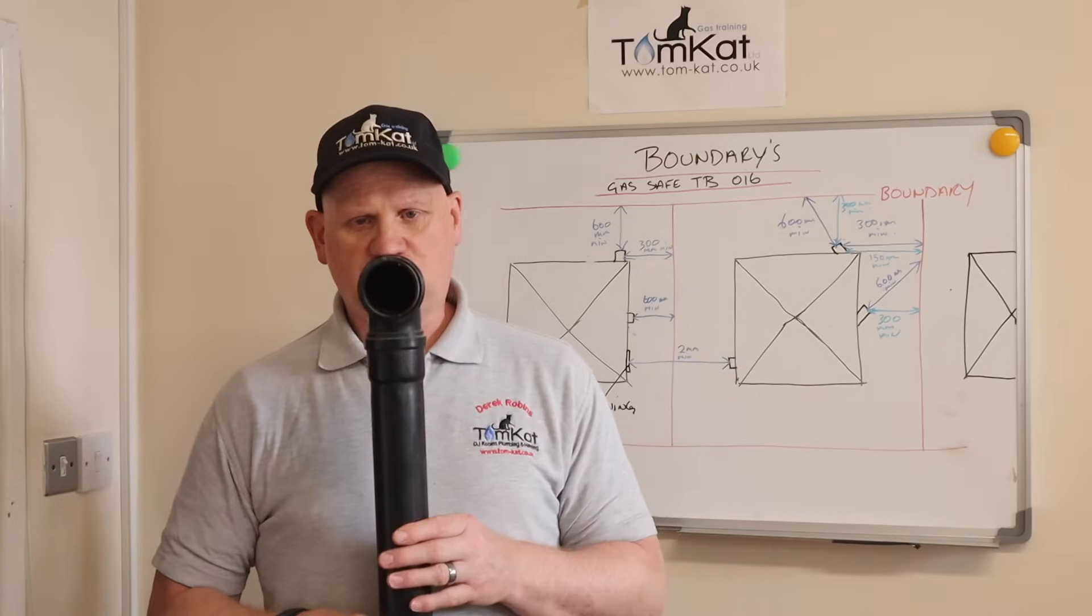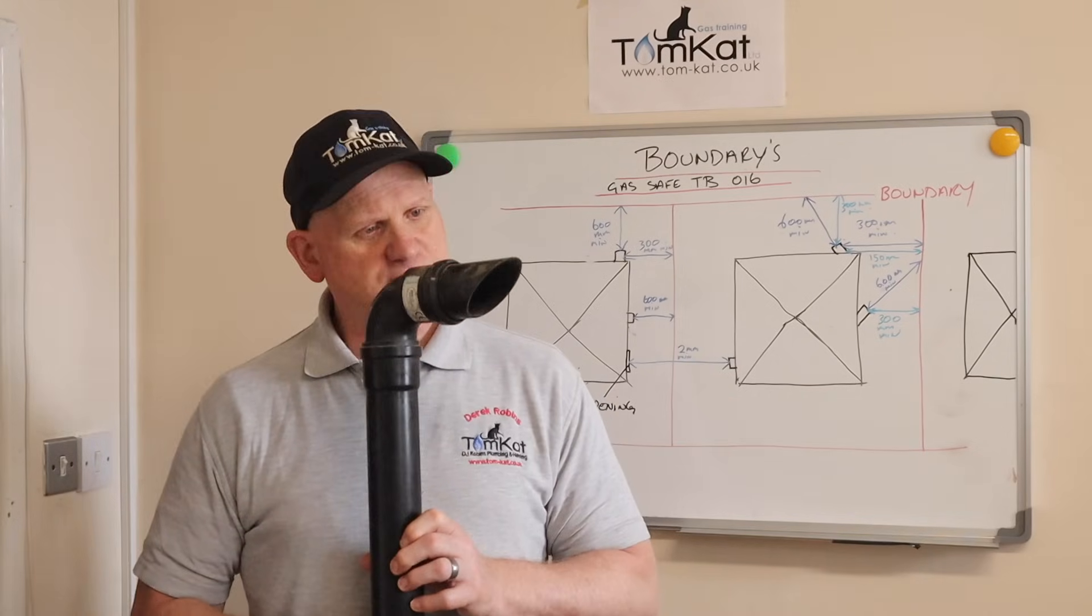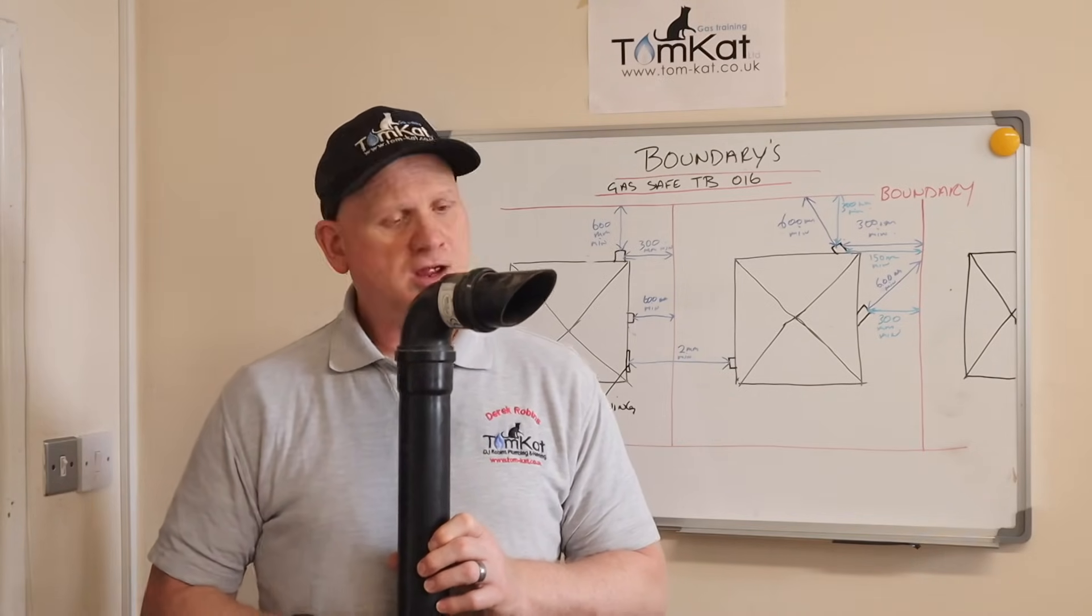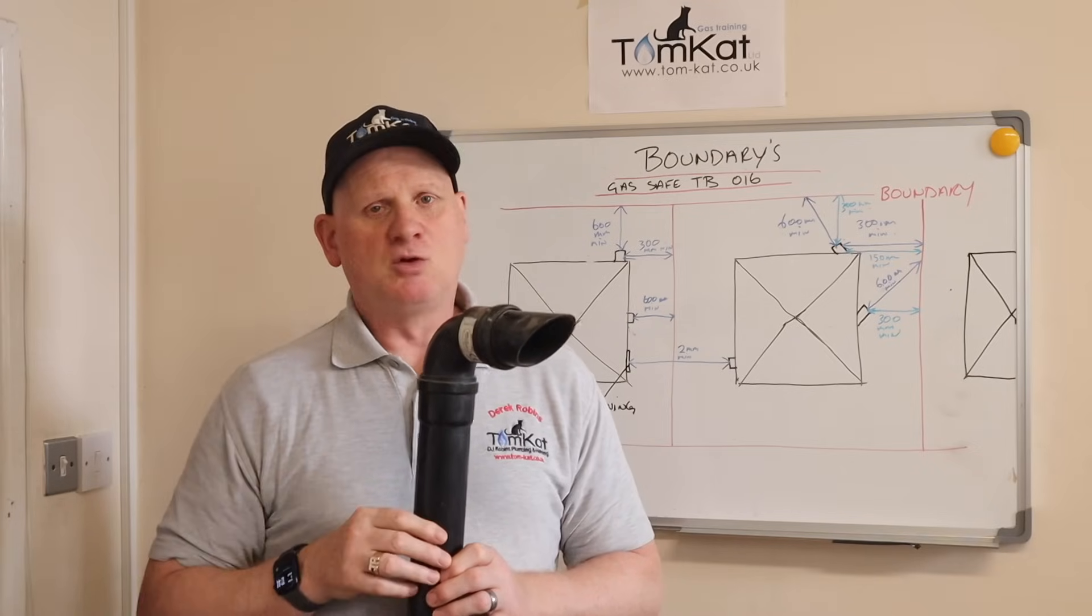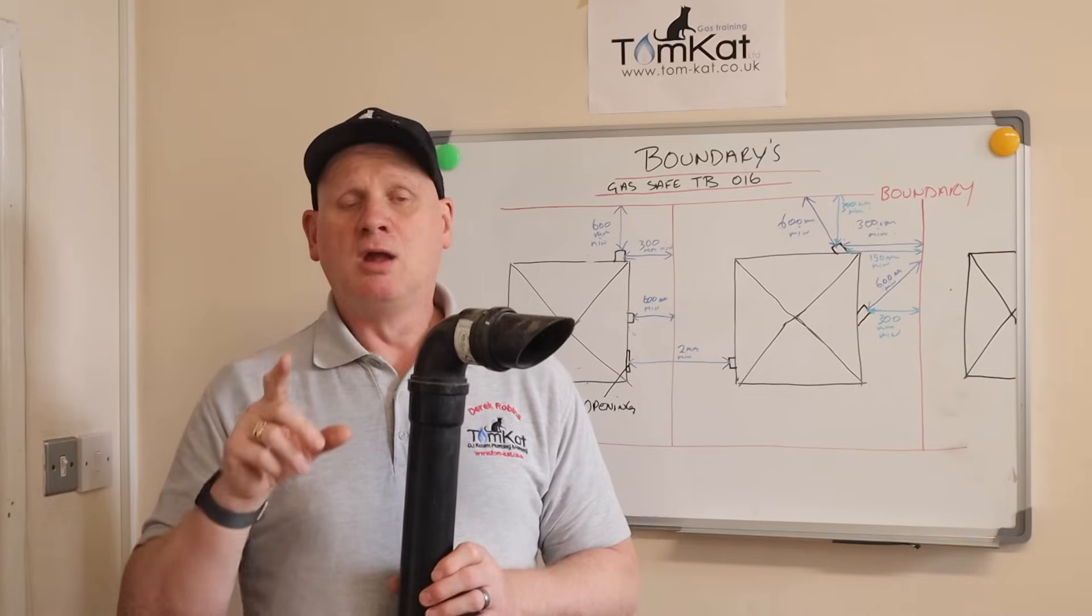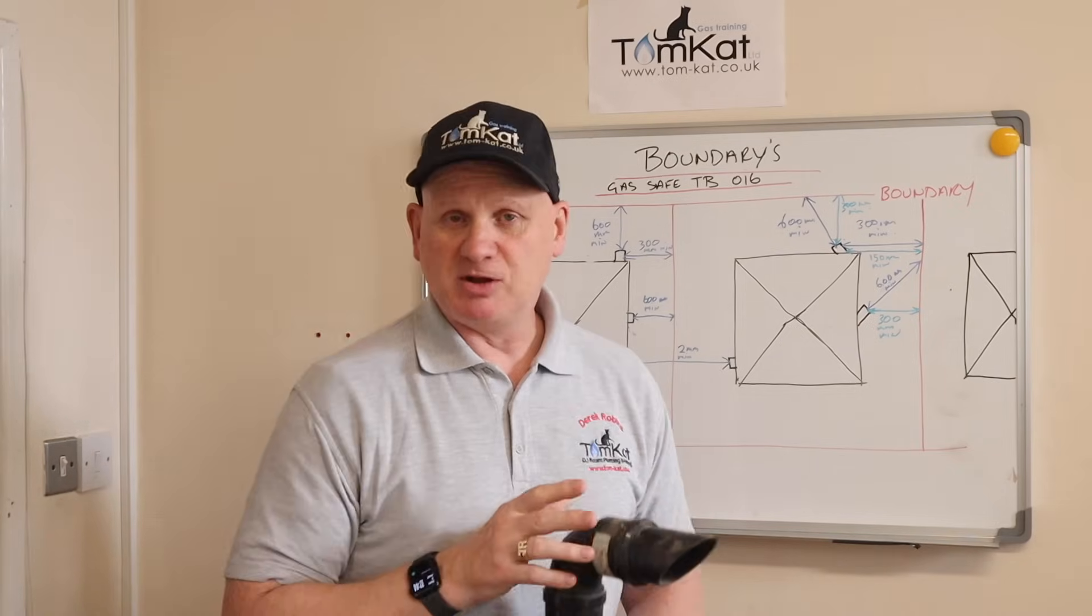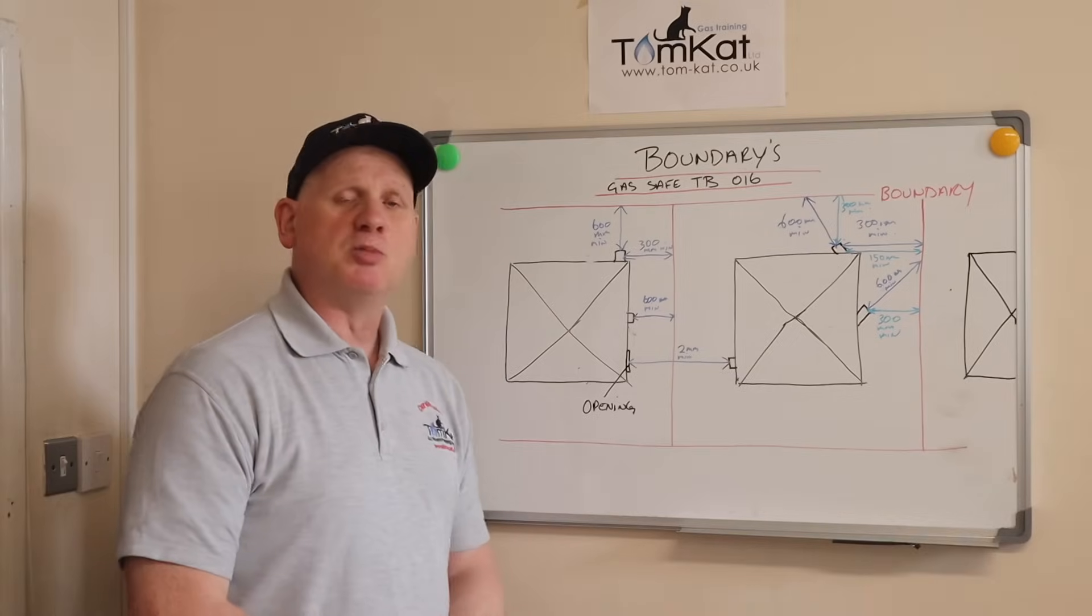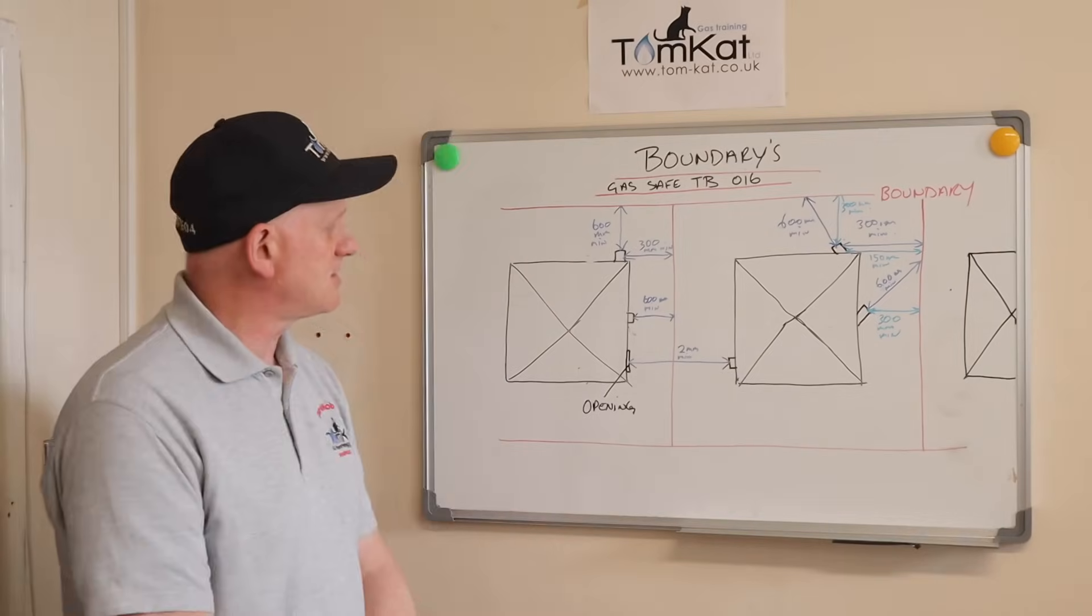Now, let's see how just turning your plume management kit by 45 degrees from the wall can help you massively with the dimensions from boundaries, according to document J of the building regulations, and the gas safe technical bulletin 016.